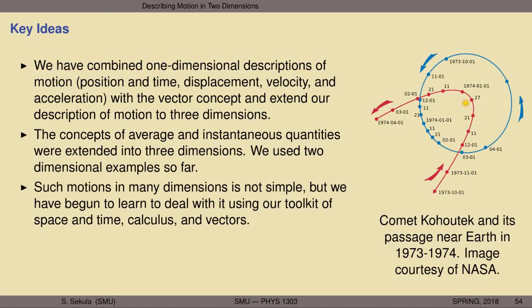Such motions in many dimensions is certainly not simple, but we will begin to explore kinds of two-dimensional motion which at first may seem quite complex. Through the lens of the mathematics we have developed here, however, we will see it's not as bad as it seems — especially once you can make simplifying assumptions about forces. We will get very useful answers using our toolkit of space, time, calculus, and vectors, applicable even to complex motions like comets swinging around the Sun and planets orbiting in nearly circular patterns around their parent star.